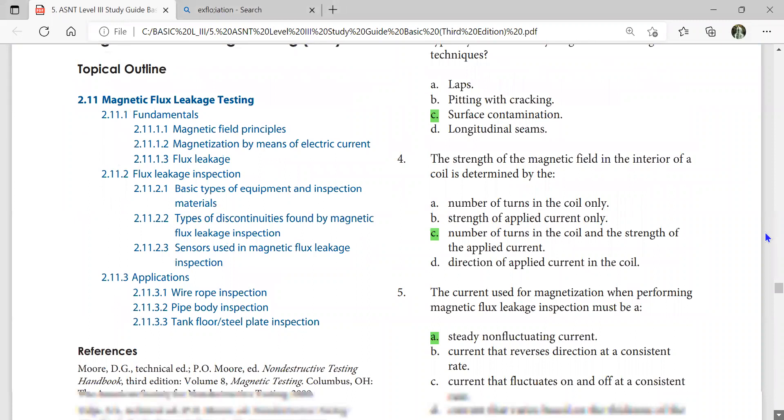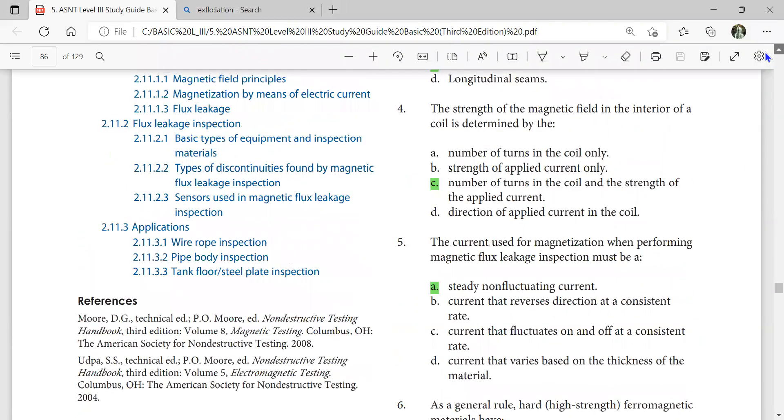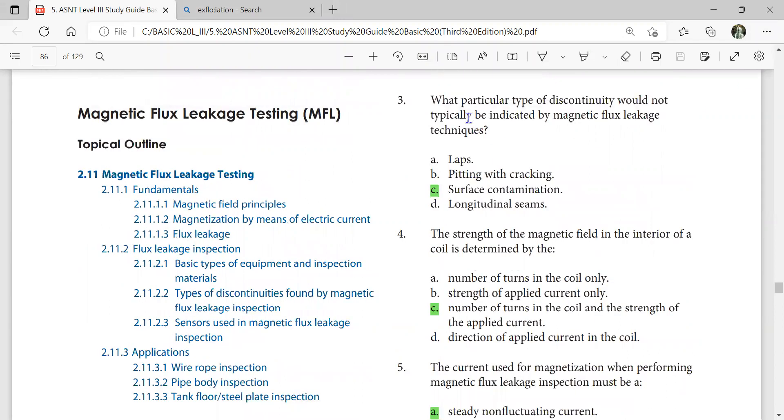Then we go for MFL, magnetic flux leakage. Let us start from here. What particular type of discontinuity would not typically be detected by magnetic flux leakage techniques?